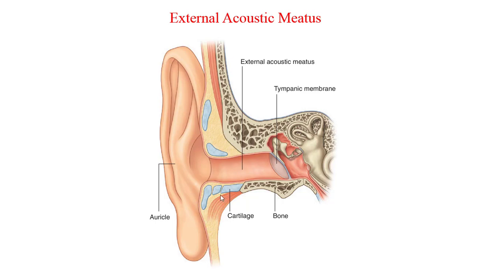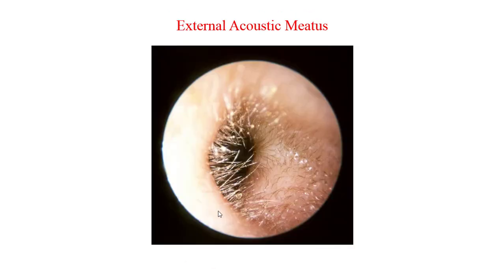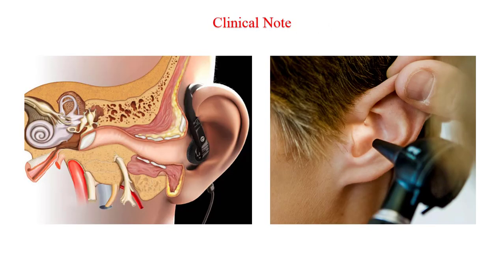The lateral third of the canal is composed of cartilage and is about 8 mm long. The medial two-thirds is the bony meatus of the temporal bone. The outer third of the external auditory meatus is lined with hairs and has cerumen or ear wax. These are both quite functional additions to the canal, as they trap insects and dirt, protecting the medial most point of the outer ear, the tympanic membrane.